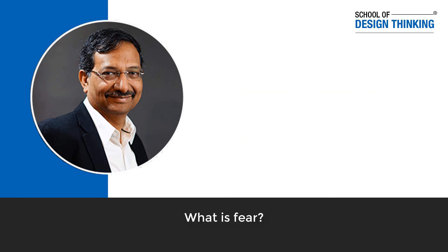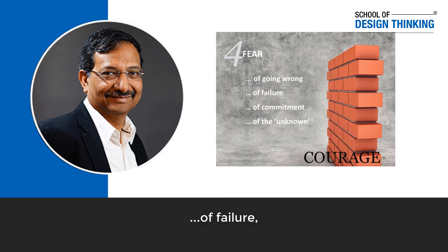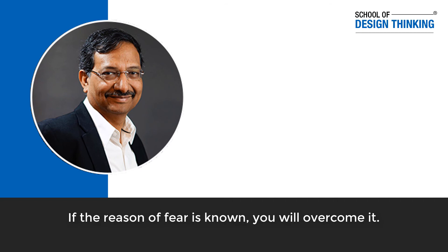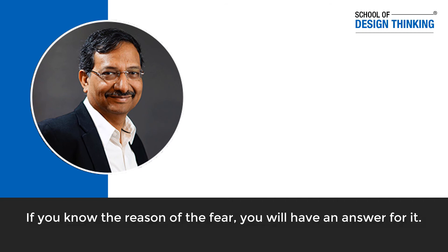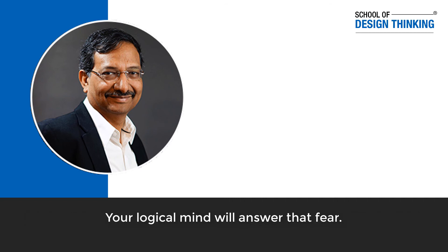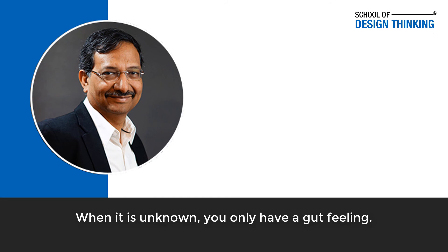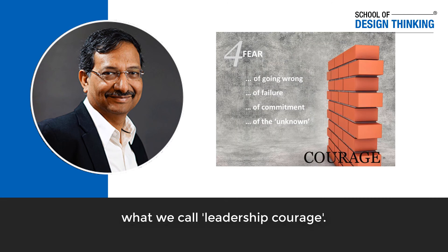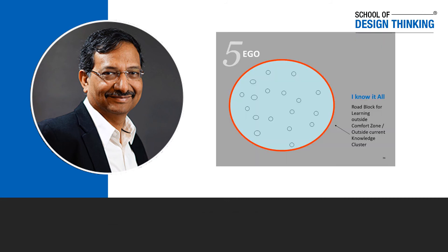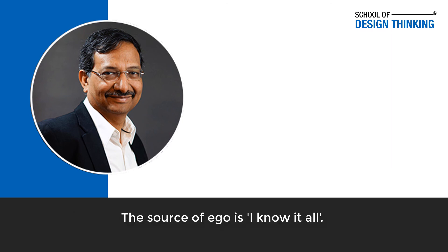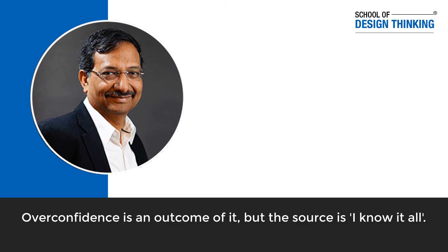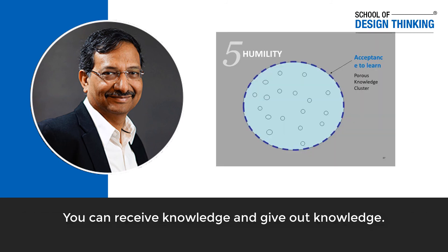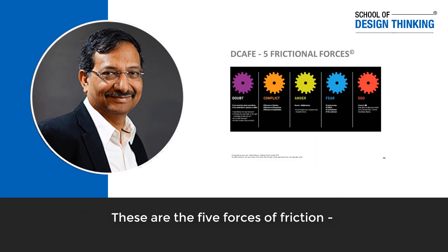The fourth element is fear. Fear is of going wrong, failure, commitment, or the unknown. If the fear is known, you will overcome it — a logical mind can answer it. When it is unknown, you only have a gut feeling. To counter fear, you need courage — what we call leadership courage. Fifth is ego: 'I am always right.' The source of ego is 'I know it all.' Overconfidence is an outcome, but the source is 'I know it all.' Humility means you can receive knowledge and give out knowledge — it is acceptance to learn. These five frictional forces are doubt, conflict, anger, fear, and ego.